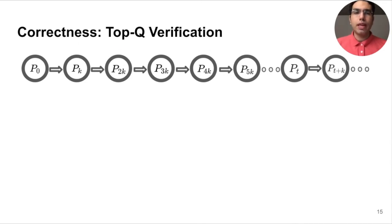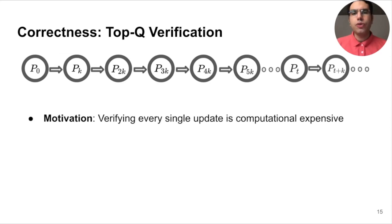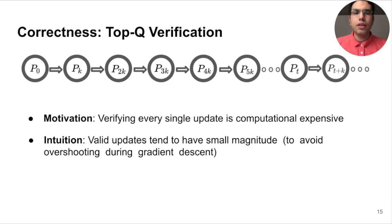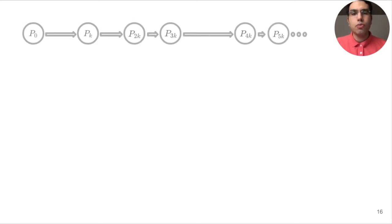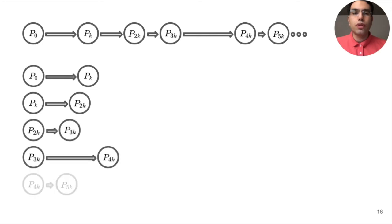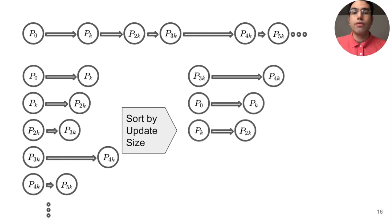We have demonstrated the correctness of stepwise verification, but it has a drawback. Verifying the complete proof can be as expensive as retraining the whole model. Our intuition is that having large valid updates would be akin to having a large learning rate in gradient descent, which is likely to cause oscillation and other instabilities in training. We therefore hypothesize that valid updates are typically small in magnitude, and that we can save computational costs by only verifying the largest updates. Let's see this process in more detail. Here, we show the proof sequence for the first epoch that runs from P_0 to P_5K. We use the length of the arrows to demonstrate the distance between the initial and the final states of each update. We sort all the updates by their distances, and select the two largest updates to verify and discard the rest.